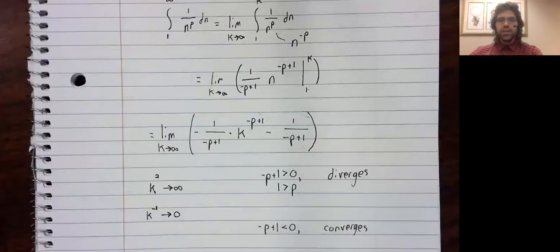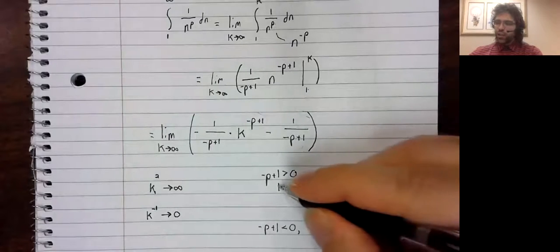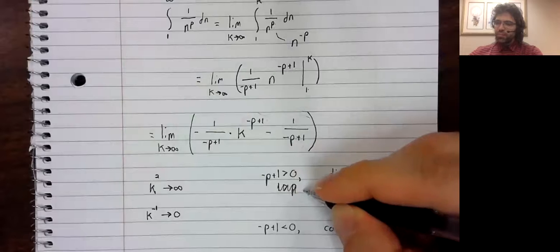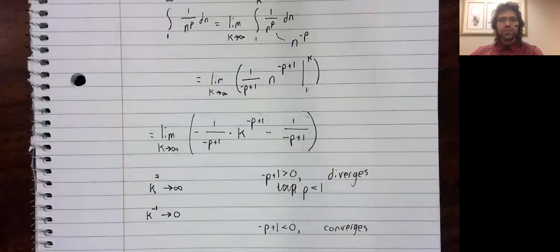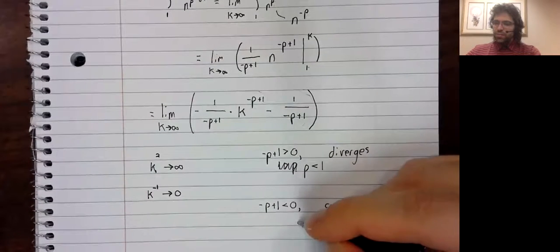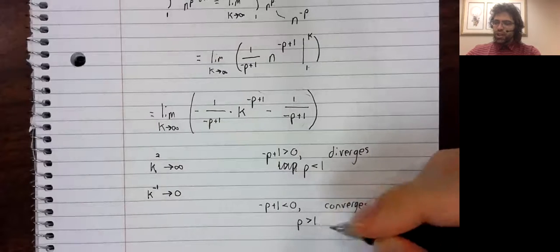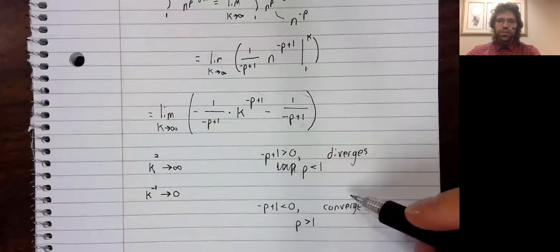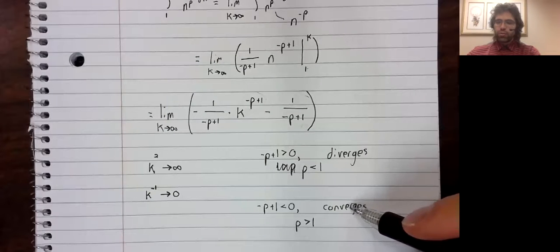If P is less than one, let me rewrite to one is greater than P. If P is less than one, then the integral diverges. If P is greater than one, the integral converges.